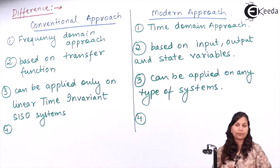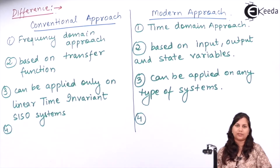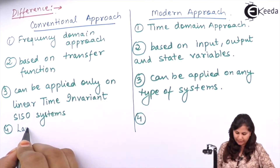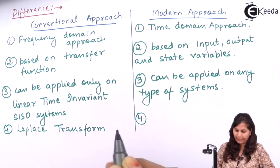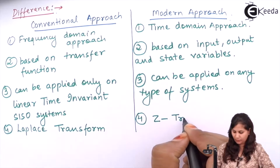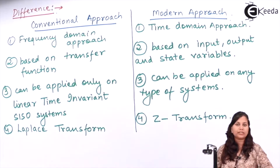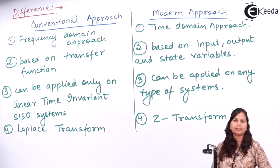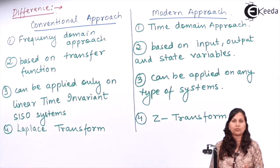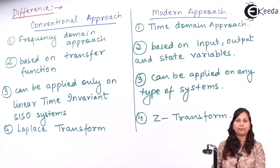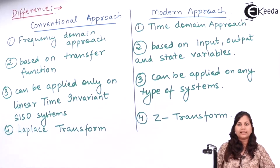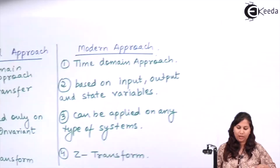Another difference is that the conventional approach uses the Laplace transform, whereas the modern approach uses the Z transform. So to summarize: the conventional approach is the frequency domain approach based on the transfer function, while the modern approach is the time domain approach based on input, state, and output variables.